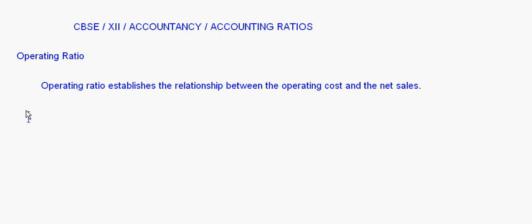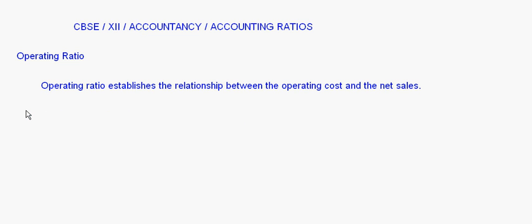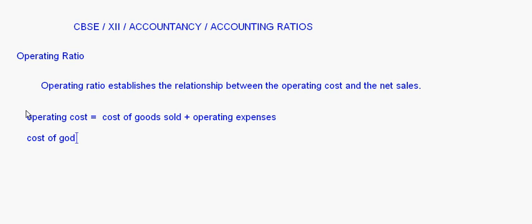Operating cost will be equal to the cost of goods sold plus operating expenses. We already know the formula for computing the cost of goods sold — cost of goods sold is equal to net sales minus gross profit.